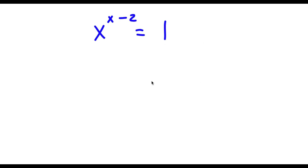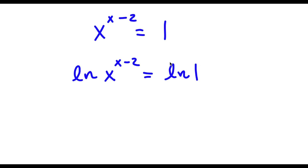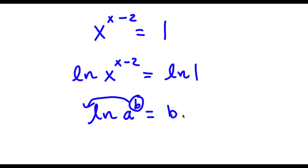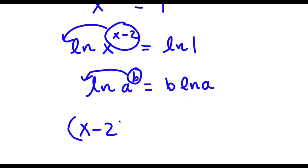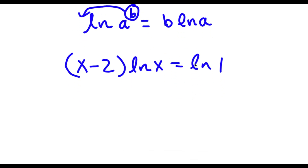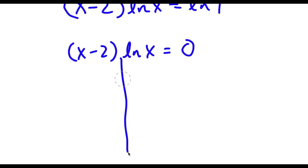Now I'm going to take the natural log on both sides. So I have ln of x to the power of x minus 2 is equal to ln 1. Now if I have something in the form ln a to the power of b, I can move the exponent b to the front — so this equals b times ln a. So I can move x minus 2 to the front: x minus 2 times ln x is equal to ln 1, which equals 0. This gives me two equations: x minus 2 equals 0, and ln x equals 0.